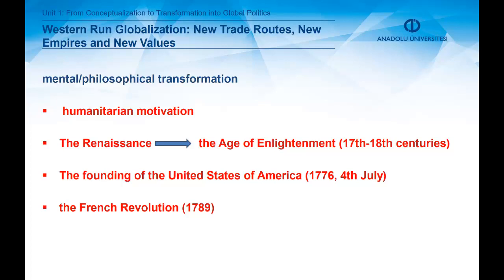Apart from these economic and geopolitical transformations, we should also talk about some mental and philosophical transformation. The Renaissance, roughly between the 14th and 17th centuries, was a period of humanism, art, music, and self-awareness. These values first arose in Florence, Italy, and then spread throughout the whole continent. The Renaissance started the age of enlightenment in various countries of Europe, such as France, Scotland, Germany, and also in America. Values like liberty, separation of church and state, tolerance, and scientific research became the characteristics of this new age.